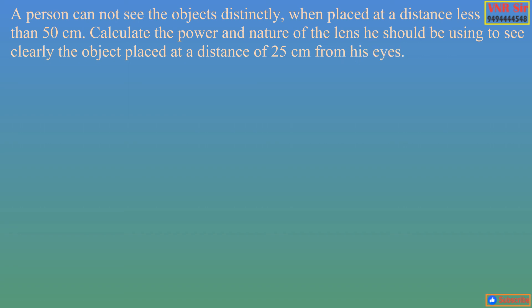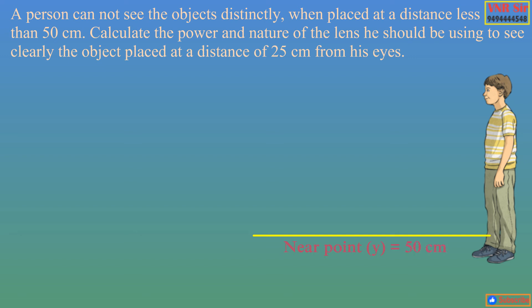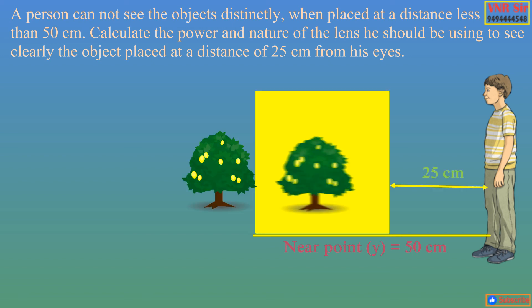So here the question is, the near point of the person is 50 cm because the person is not able to see the objects placed less than 50 cm. That means he is suffering with hypermetropia. He can't see near objects clearly. Near point for every person is 25 cm but for this person it is 50 cm.